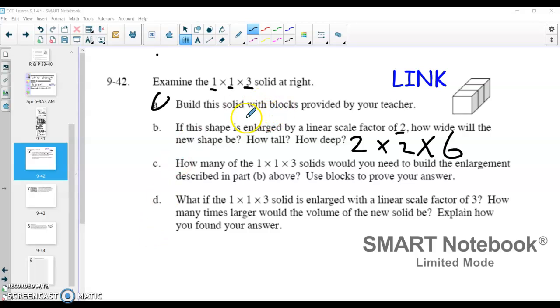Okay, so where we left off was with this 1x1x3 shape here, and we enlarged it by a linear scale factor of 2, meaning we made it 2 times as wide, 2 times as tall, 2 times as deep, meaning that that must now be a 2x2x6 shape.